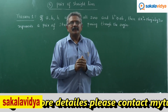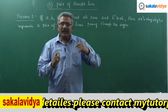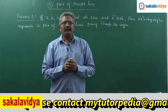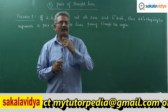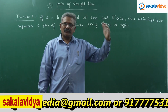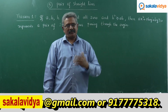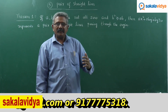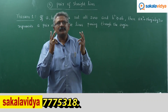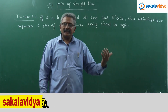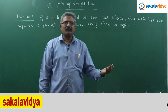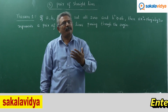We need to prove that ax squared plus 2hxy plus by squared equals 0 represents two straight lines, each passing through the origin. Any line which passes through the origin will be in the form y equals mx, as studied in the straight lines chapter. We need to prove that there exist two straight lines, one of the form y equals m1x and the other y equals m2x.